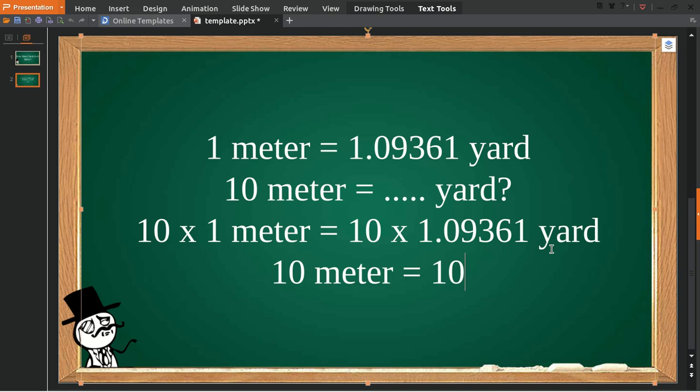So 10 meters is equal to 10.9361 yards. That answers the question. If you have any further questions you want to ask, please go and ask in the comment box of this YouTube video.